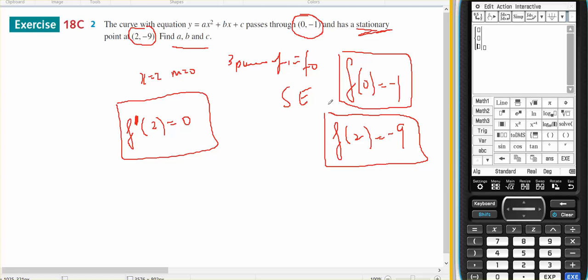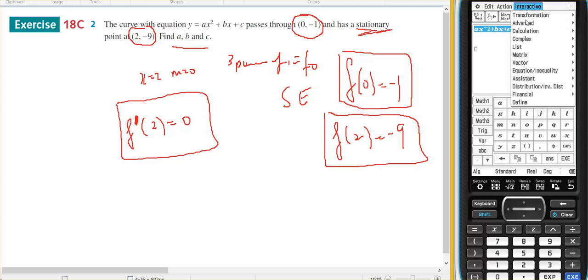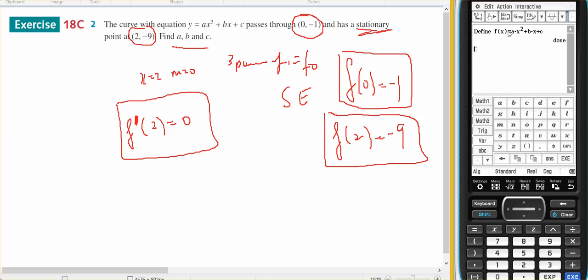So I'd like to come over here and define my function: f(x) equals ax squared plus bx plus c. Execute to make sure that a, b, and c are all okay. I'm going to go interactive and define my first piece of information: f(0) equals -1, and I'm actually told c equals -1.